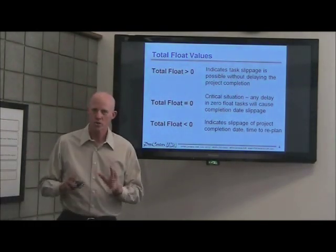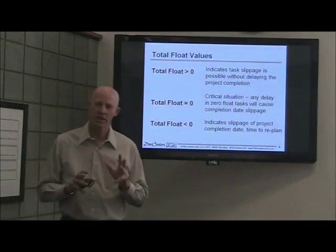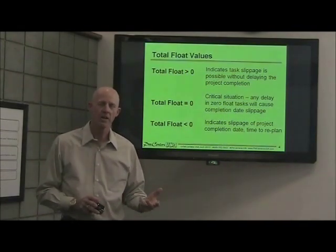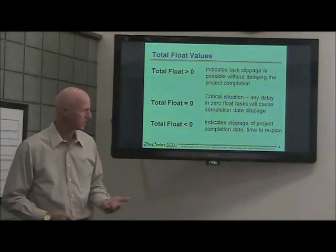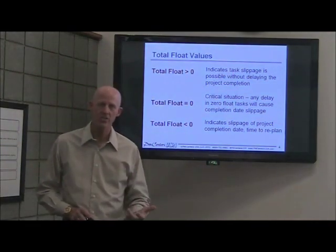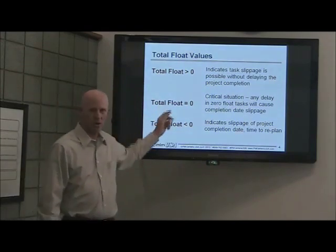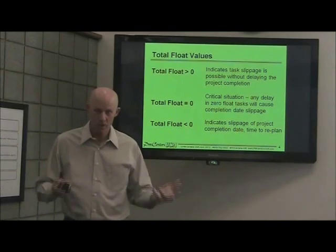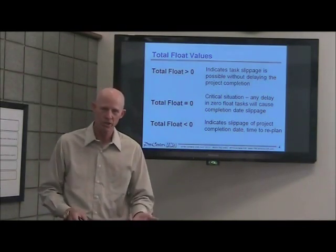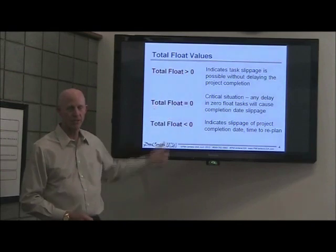When you interpret the total float, if it's greater than zero, it means you can allow that task to slip and it will not impact the completion date. If the total float is five, it means you can slip that task five days without impacting the completion date. If the float is zero, that means it's critical — you really can't allow it to slip because a day of slip will delay the completion date by a day. There's no flexibility when the float is zero.